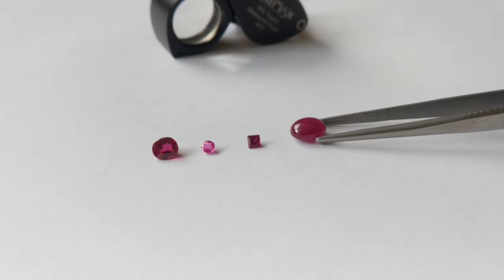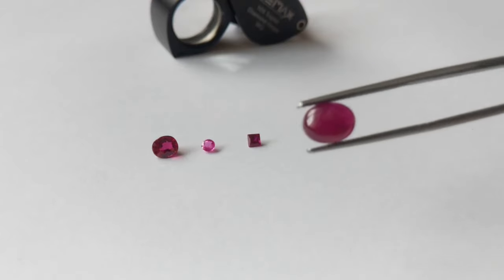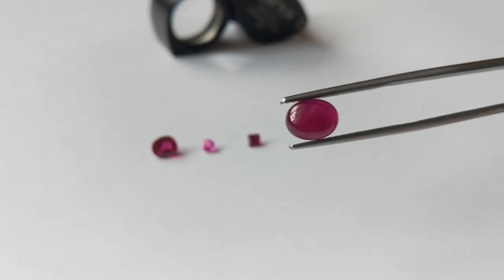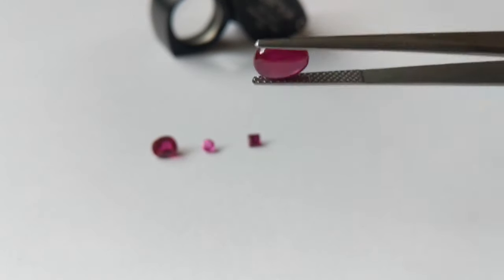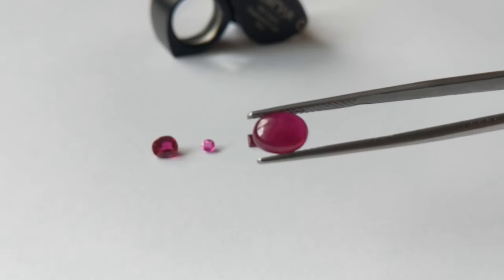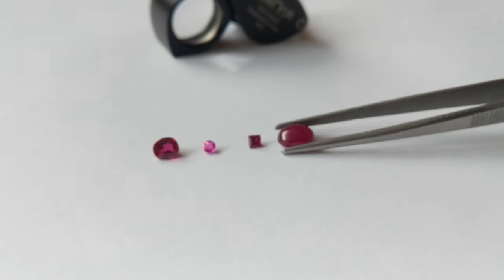So first let's look at this first one right here. So this one is a cabochon, not so clean ruby. So do you think it's synthetic or real?